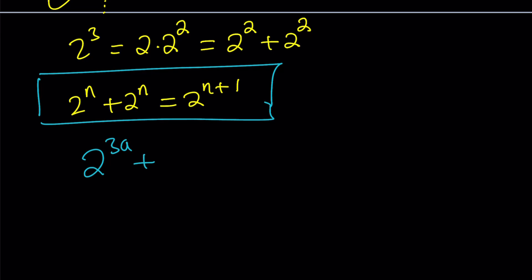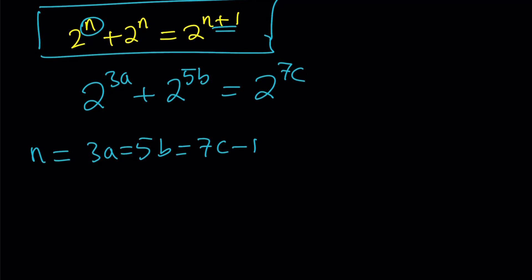2 to the power of 3a plus 2 to the power of 5b equals 2 to the power of 7c. I have a feeling I've done a similar problem before. I can't remember when. Hopefully, that's not the exact same problem. So, here's what we need. 3a and 5b have to be equal. They're equal powers of 2. So, they're going to make up n. And this number must be one more than these numbers. In other words, one less than that number is going to equal n because they're all equal to n, right? If 7c is equal to n, then n is equal to 7c minus 1. Awesome.